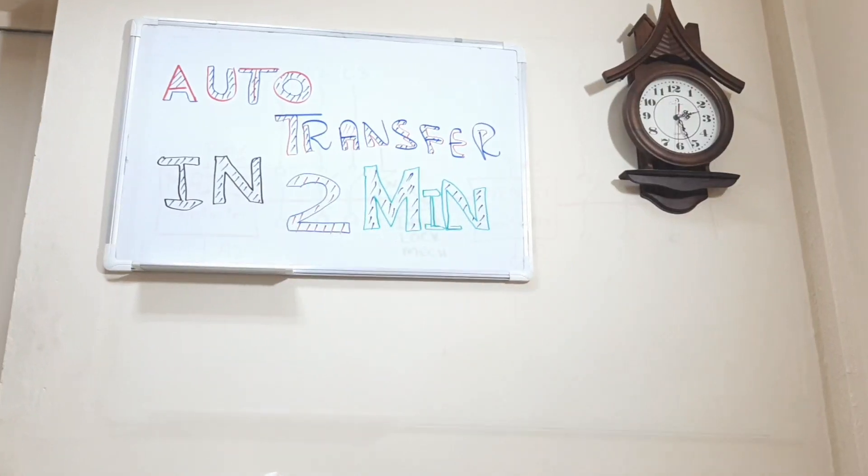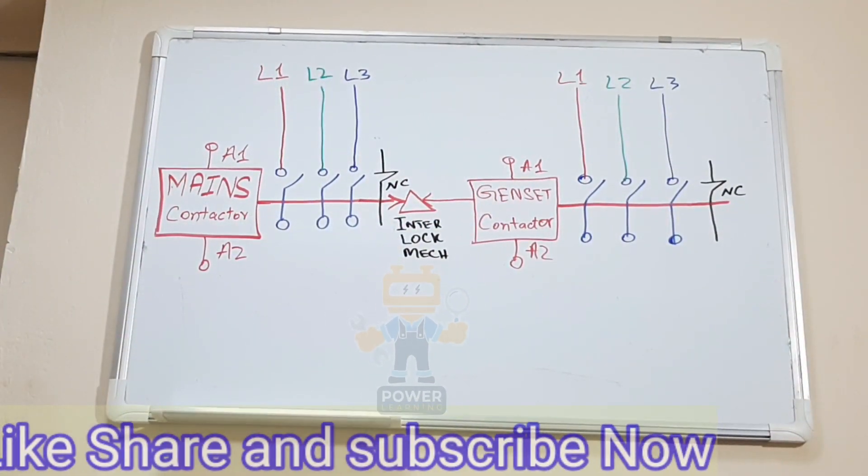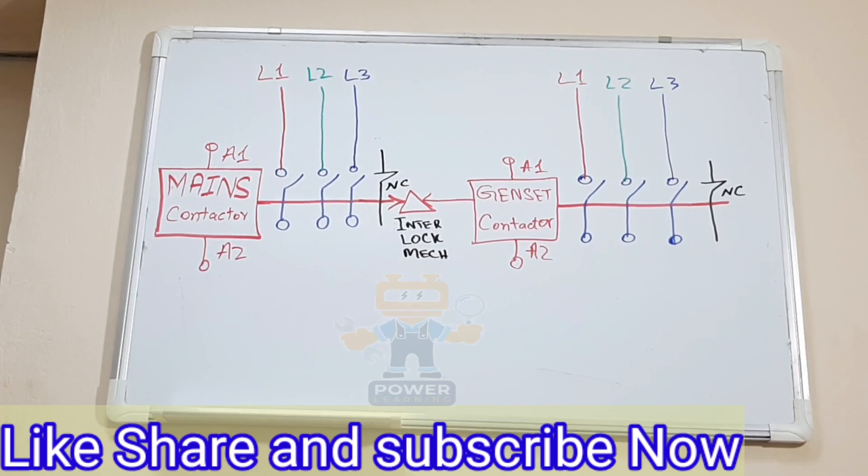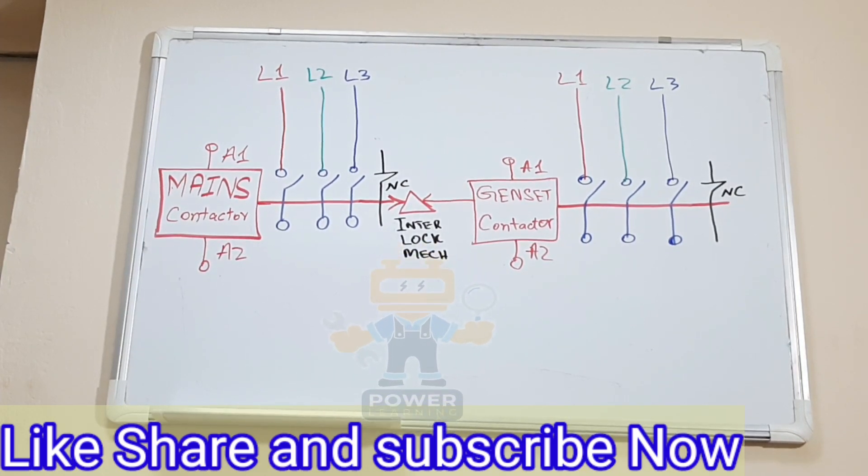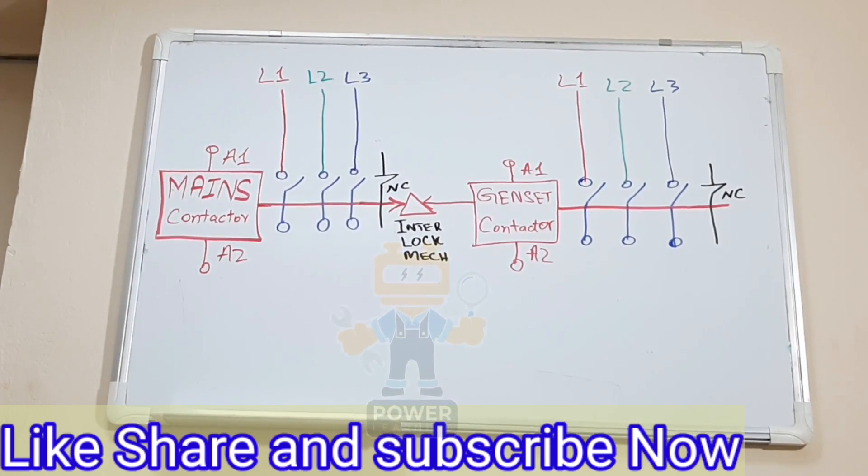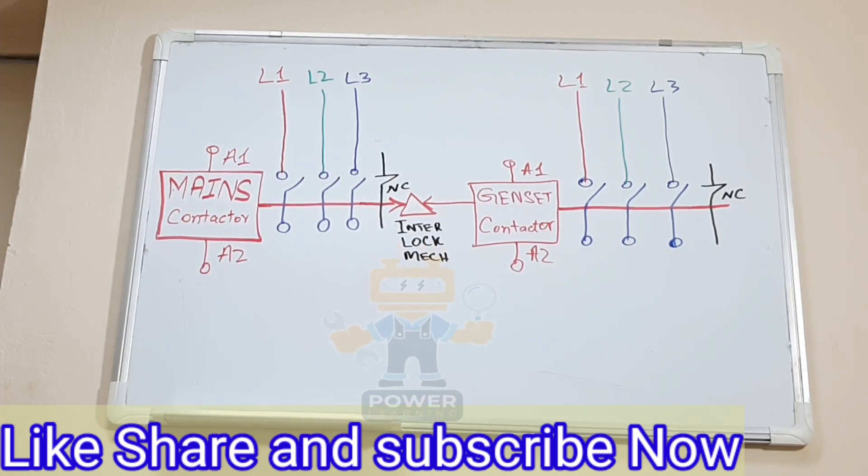Let me show you. Look at here, this is the half I drew, now I will show you the remaining part. We have here two contactors: one is mains contactor, one is genset contactor.